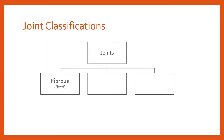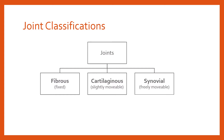The three main joint classifications: firstly, fibrous joints, sometimes known as fixed joints. Secondly, cartilaginous joints — slightly movable, and as the name suggests, something to do with cartilage. And then finally, the third classification is a synovial joint — a freely movable joint. Synovial relates to the fact that there's synovial fluid involved, which is important for lubrication of movement.